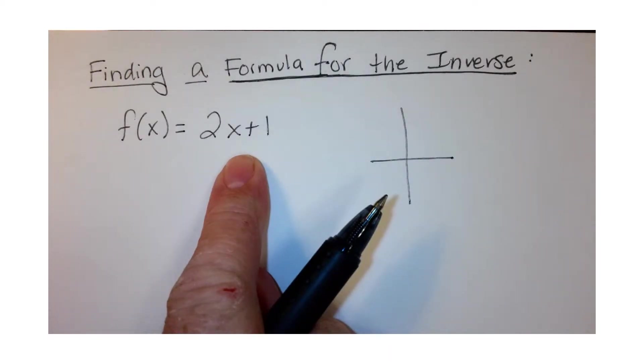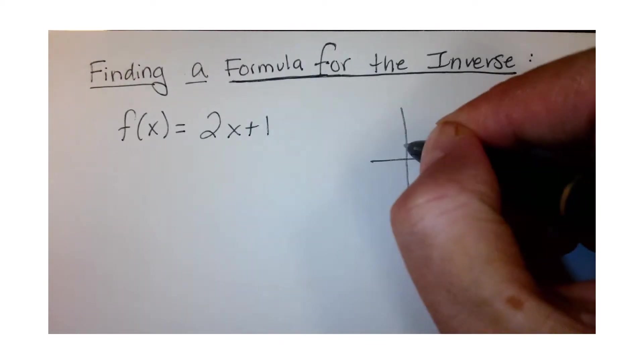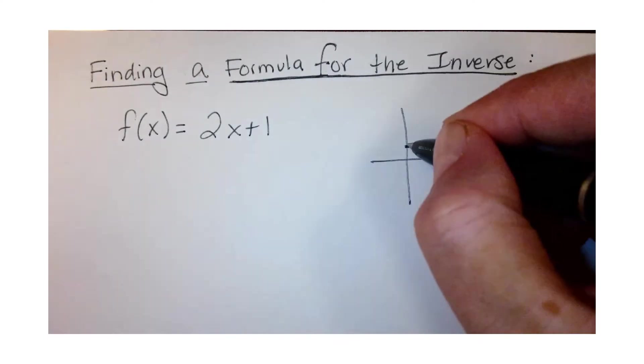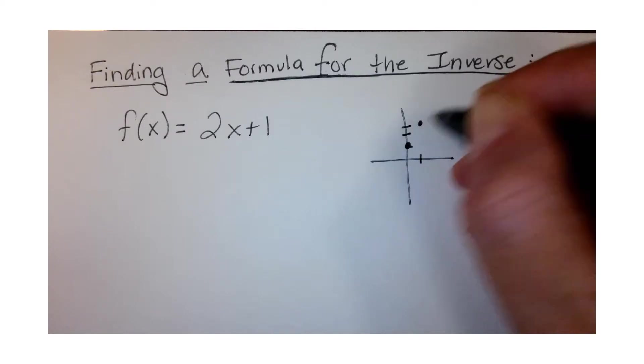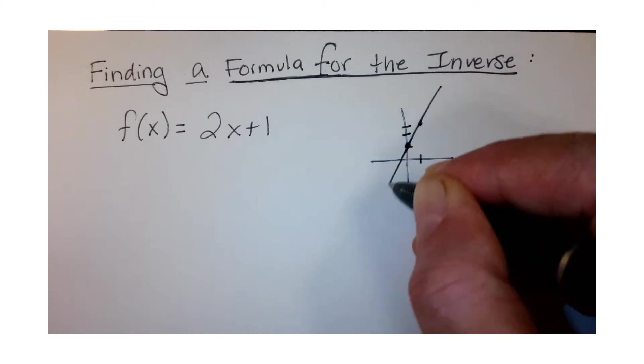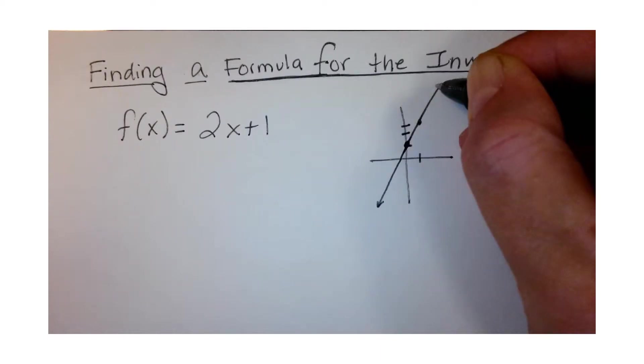This is a linear function, so it's going to go through the y-intercept (0,1) and its slope is 2, so it will be rise 2, run 1. If we use the vertical line test...